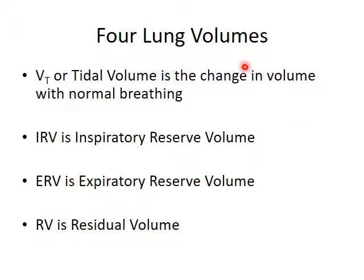We have four lung volumes. There are four independent, non-overlapping sections — basically you're dividing the lung volumes into four separate non-overlapping sections. We'll start with the tidal volume, or the change in volume of the lungs associated with normal breathing. As the rib cage and diaphragm move up and down while we're sitting relaxed and not working too hard, the lungs change a certain amount of volume.